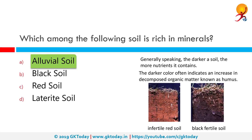Which among the following soils is rich in minerals? The correct answer is alluvial soil. Many alluvial soils are good for plant growth as they contain useful concentrations of minerals and elements needed by plants, such as calcium, sodium, potassium, silicon, phosphorus (typically as phosphates), nitrogen (as nitrates or ammonium salts), carbonates, sulfates, and more.